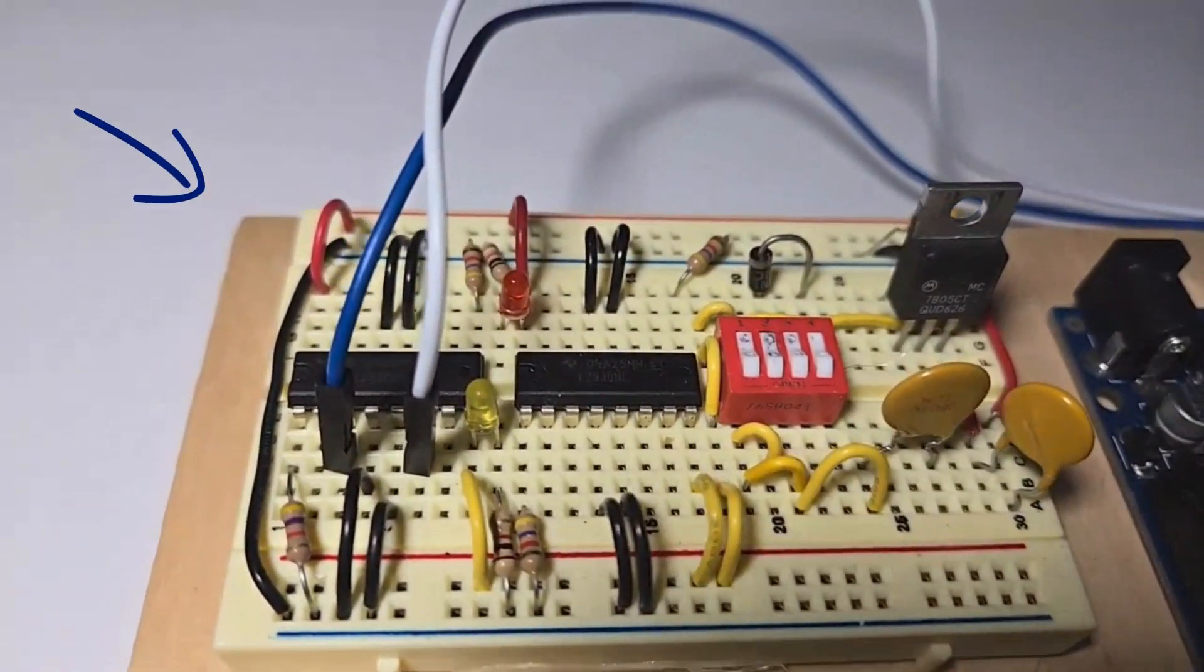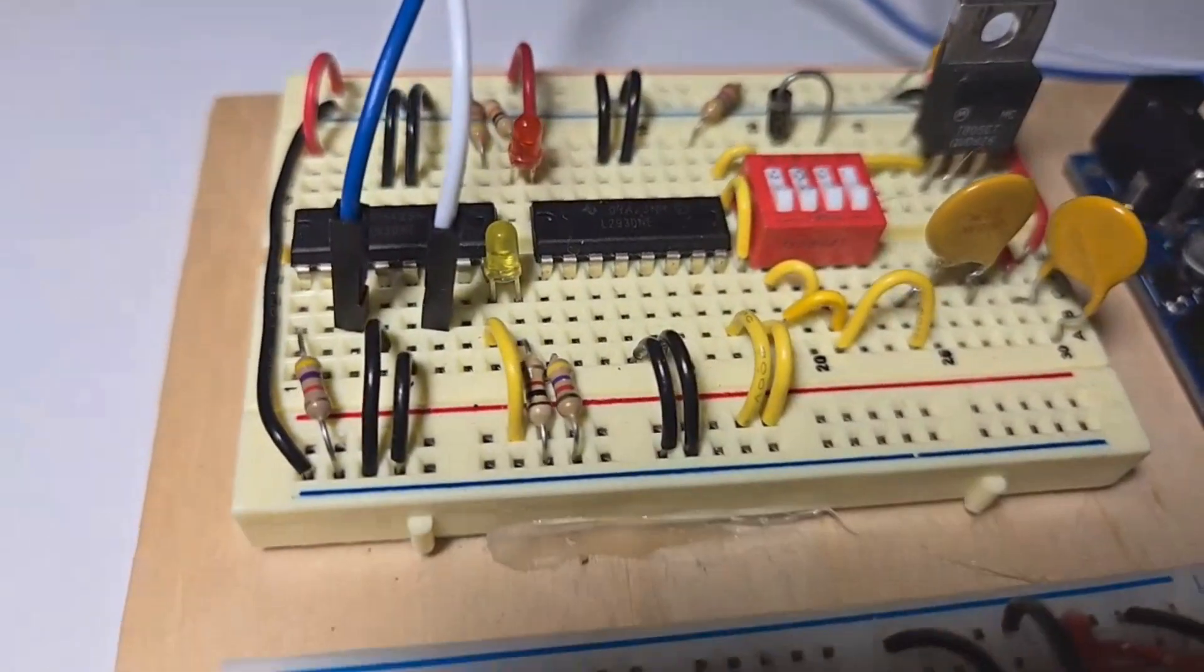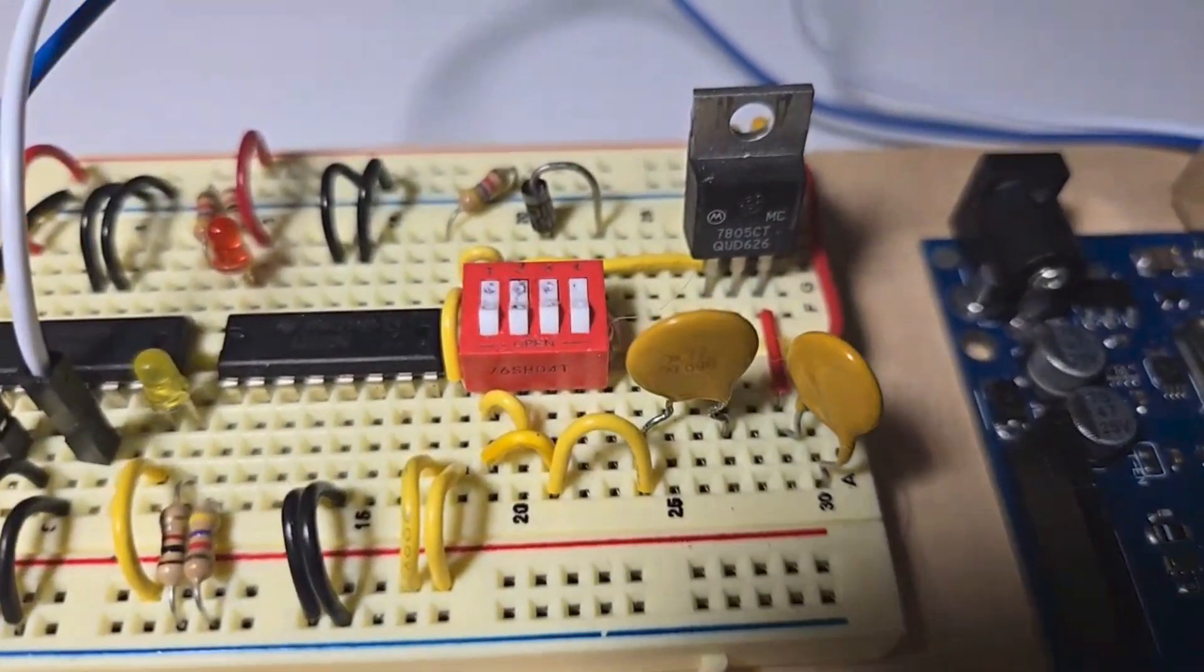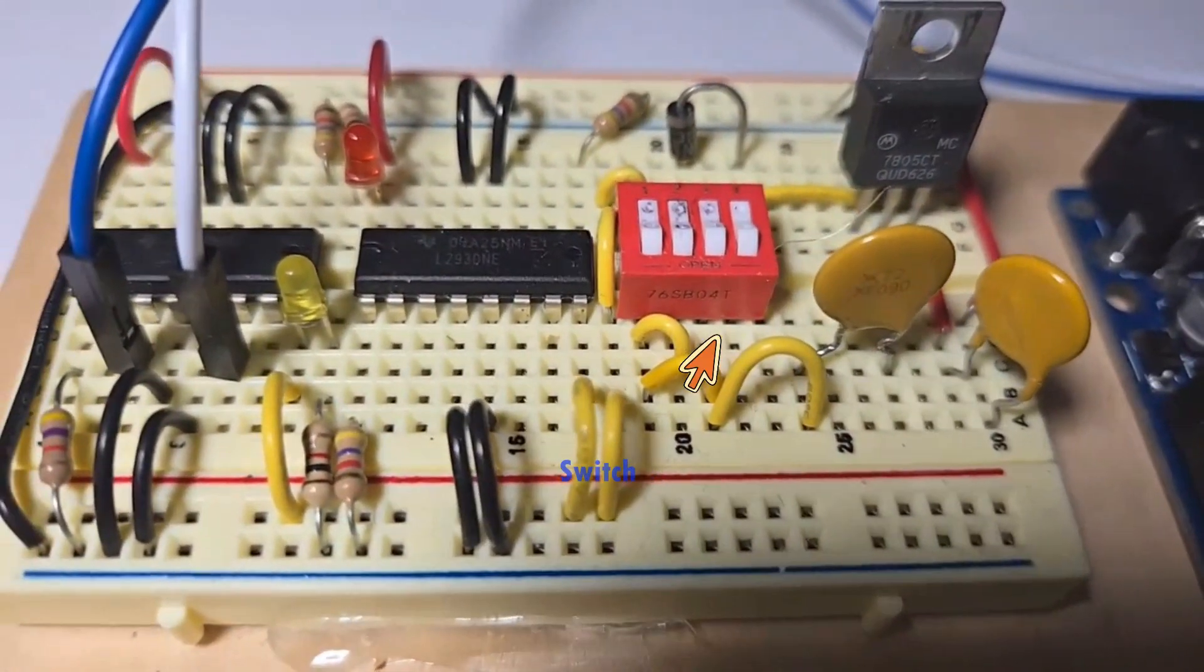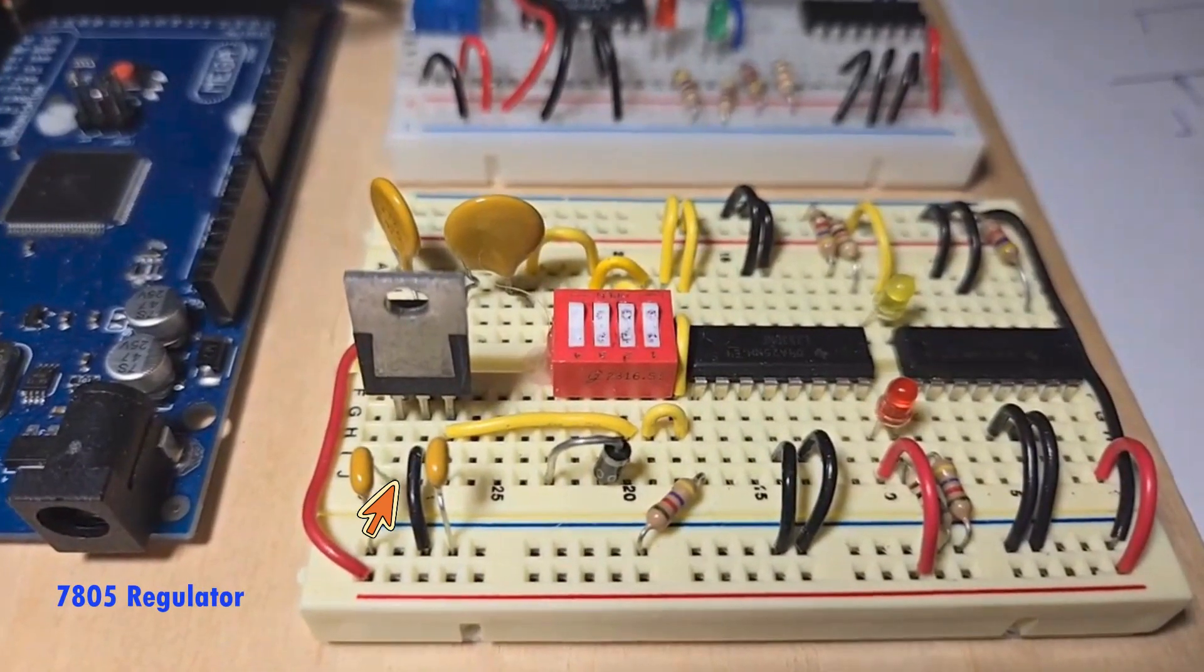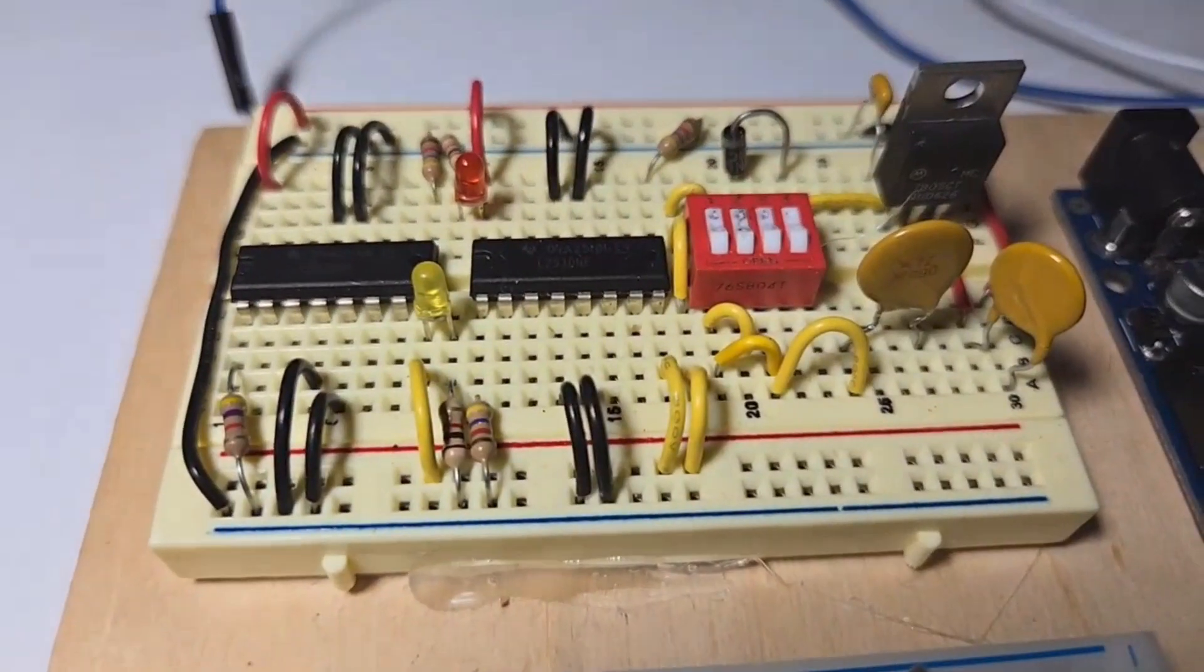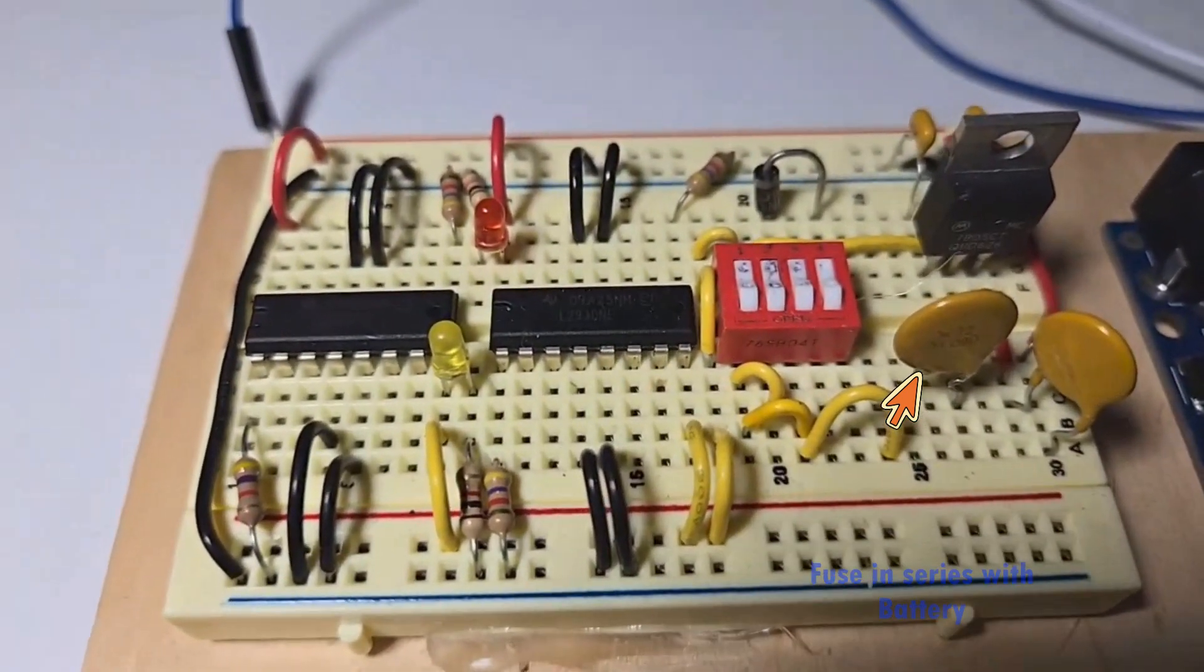This is the L293 motor control board and here I'm pointing at the two L293s. You can see they have the switches, the voltage regulator, and the two fuses. This is a view from the back, that's the regulator, and then another view. Those are the two fuses again.